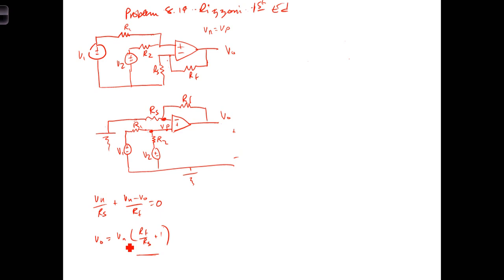At this point, V out is still in terms of V sub N. We need to express V sub P in terms of V1 and V2 connected to the non-inverting terminal. So let's write a node equation to determine V sub P in terms of V1, V2, R1, and R2.